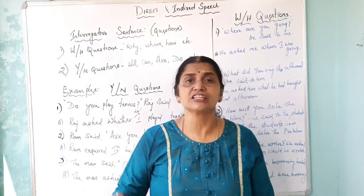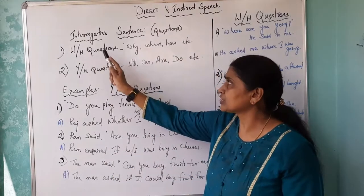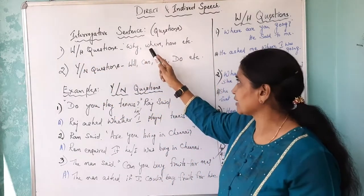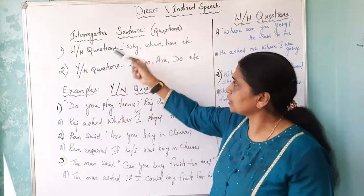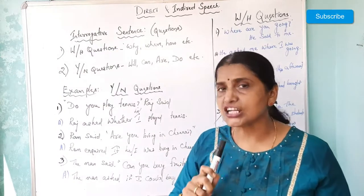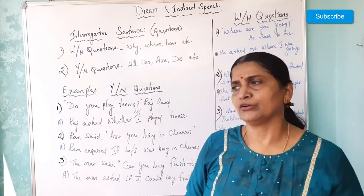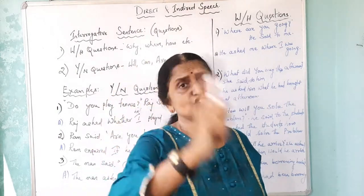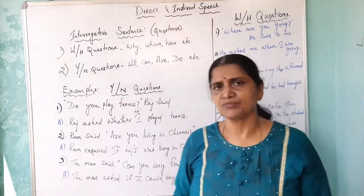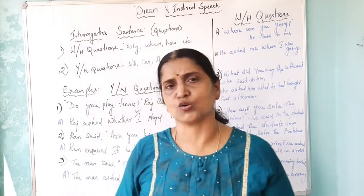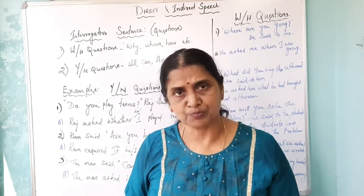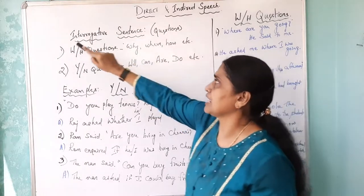WH questions deal with the letters W and H — for example, why, where, when, how. All questions which start with the letter W or H are called WH questions. For example, 'Where are you going?' — you answer with a place like Chennai. The second type is Yes/No questions, where we don't expect any answer except yes or no. For example, 'Do you like ice cream?' — your answer will be yes or no.